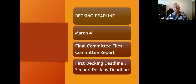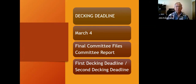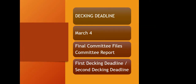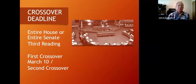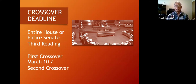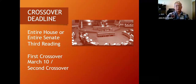The decking deadline is March 4th — that's when the final committee has to hold a hearing on the bill, make a decision, and the committee chair files the bill with the chief clerk. That's the first decking deadline, in the first half of the session; there's another in the second half. The crossover deadline is when the entire House or Senate has to pass a bill at third reading — the crossover deadline in the first half is March 10th. These deadlines represent the last day something has to happen to a bill for it to remain alive; action can be taken sooner, but no later than the deadline.